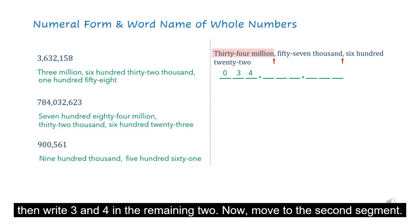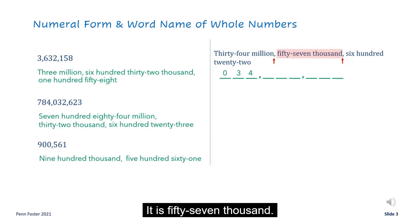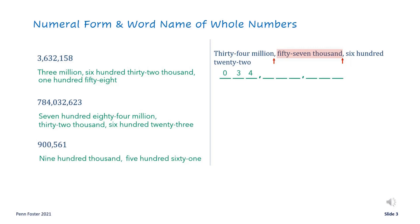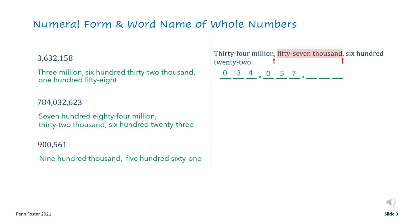Now move to the second segment — it's fifty-seven thousand. Again, there is no digit for the hundred-thousandths position, so place a zero. In the next two spaces, put 5 and 7.